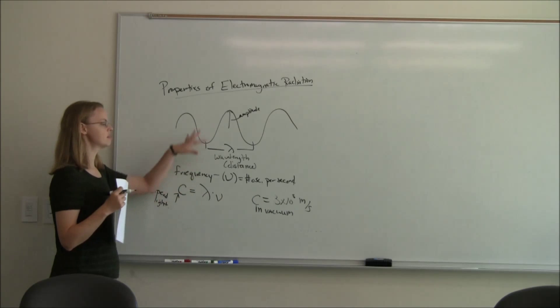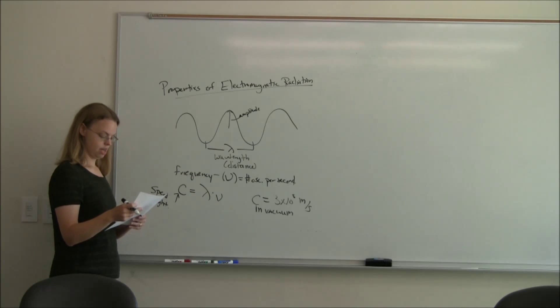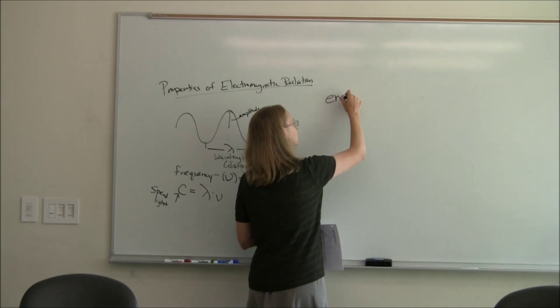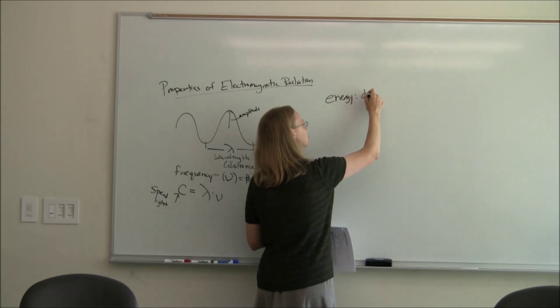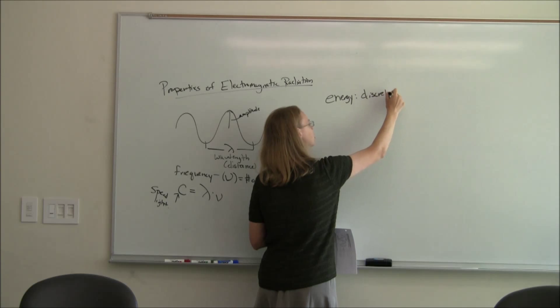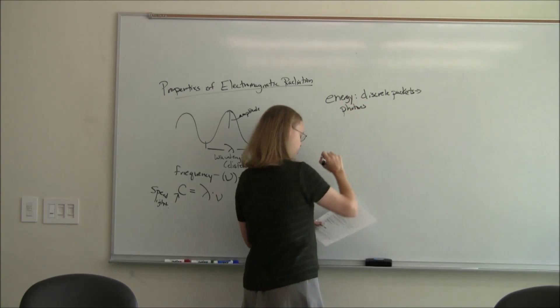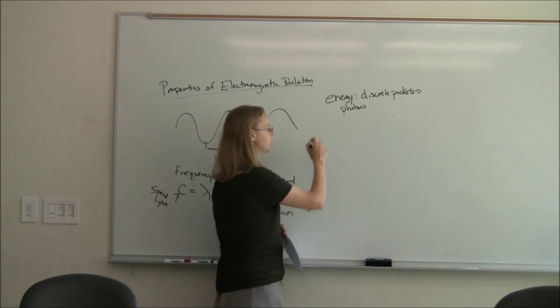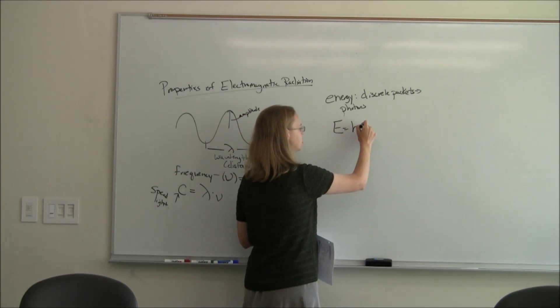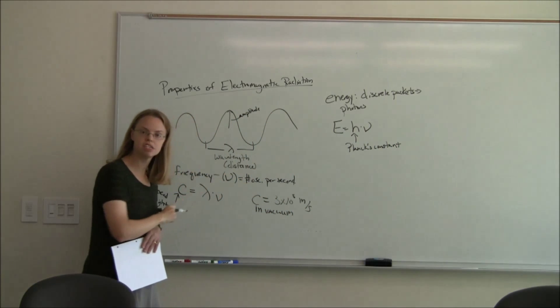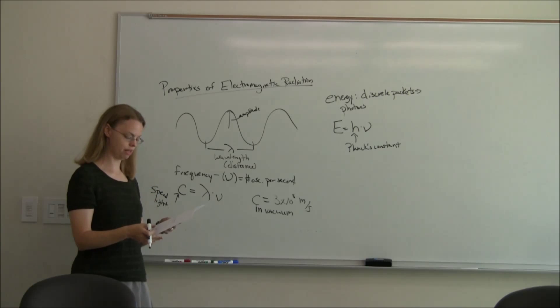And so this is sort of the wave theory, but we can also think of light as energy. In this case, we think of light coming in discrete packets. And we call those discrete packets photons. And we can talk about the energy of the photons. And so here we can talk about the energy of the photon, where E is equal to h nu, where H is Planck's constant.